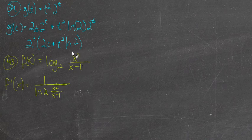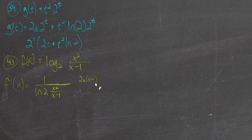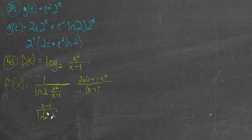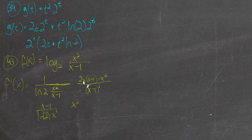Then we need to take the derivative of this function, so we will use the quotient rule there. We have 2x times x minus 1, minus x squared times the derivative of the denominator — that's just 1 — all over x minus 1 squared. This fraction is in the denominator, so this can become x minus 1 over the natural log of 2 times x squared. Then we distribute 2x, and we'll have like terms with x squared: 2x squared minus x squared gives us x squared minus 2x, over x minus 1 squared.